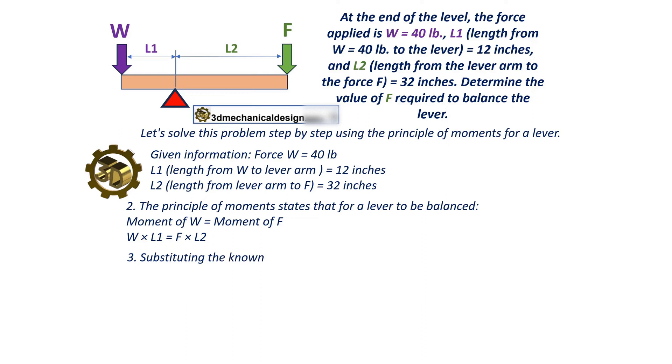Substituting the known values: 40 times 12 equals F times 32. Solving for F: 480 equals F times 32. F equals 480 divided by 32. F equals 15 pounds.